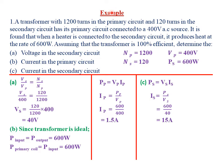So today I'm looking at further examples involving calculations on transformers. Our first question reads that a transformer with 1,200 turns in the primary circuit and 120 turns in the secondary circuit has its primary circuit connected to a 400 volt alternating current source. It is found that when a heater is connected to the secondary circuit, it produces heat at a rate of 600 watts.